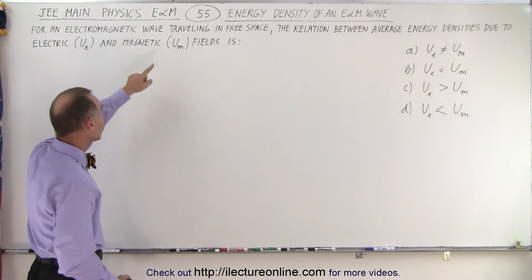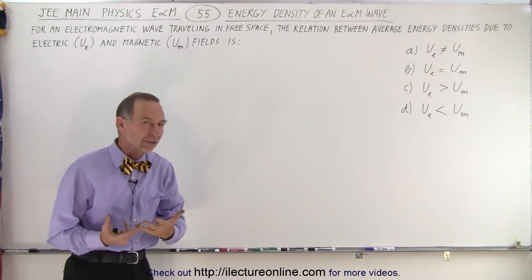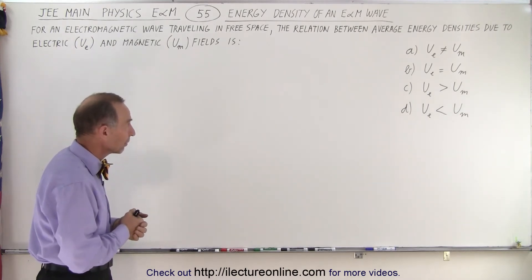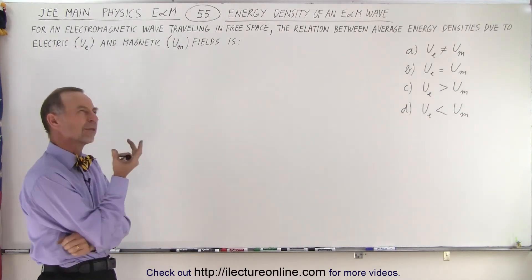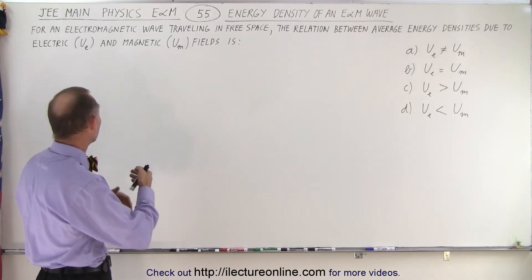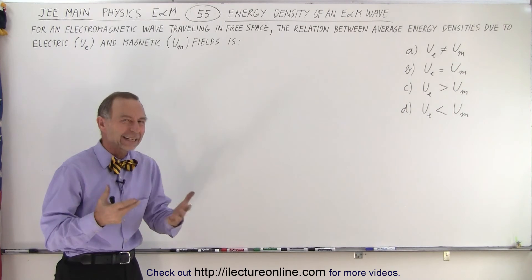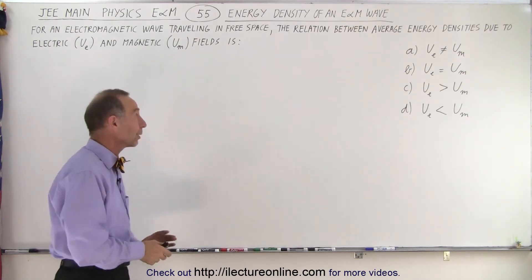So they use U sub E and U sub M as the energy densities due to the electric portion of the field and the magnetic portion of the field. So due to the oscillating electric field and oscillating magnetic field in an electromagnetic wave is probably the better way to say it.